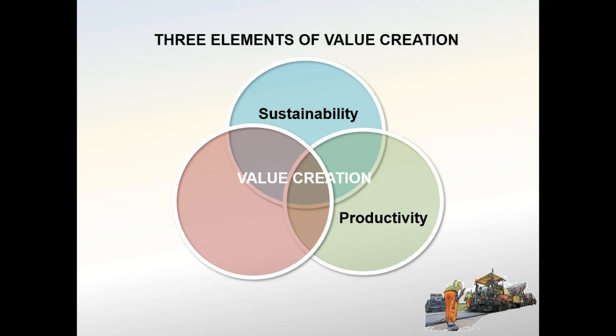Even if an operation carefully uses inputs to create outputs without waste or pollution, that operation will not be sustainable if it cannot cope with changes in the environment. Sustainability also relies on robustness — an ability to operate despite changing conditions. Our world has grown increasingly complex, and the average life of US companies has been decreasing, indicating a lack of robustness as companies fail to cope with changes driven by globalization, climate change, and advancing technology.